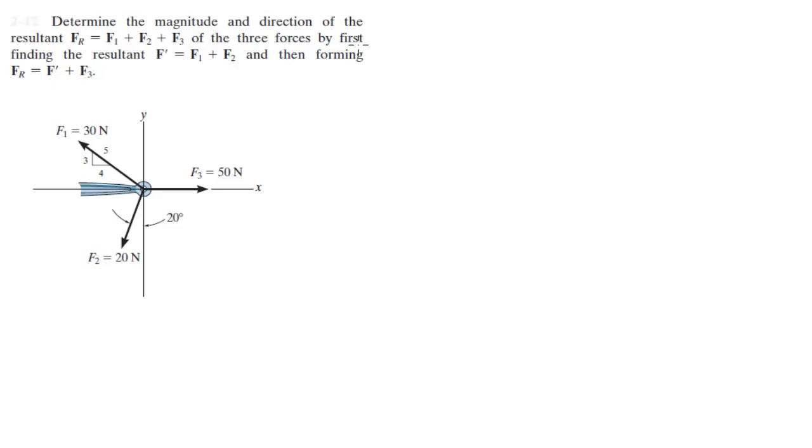Alright guys, now we're going to do this problem which says determine the magnitude and direction of the resultant force FR, which is the sum of these three forces, by first finding the resultant force between F1 and F2 and then forming FR. What they want you to do is add these two and then add the other one.